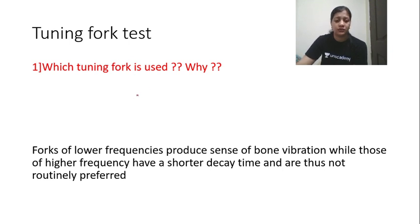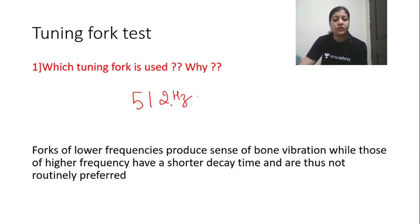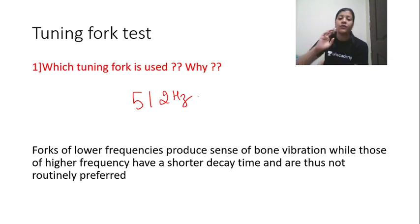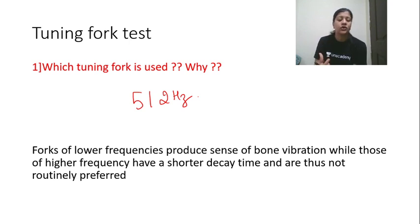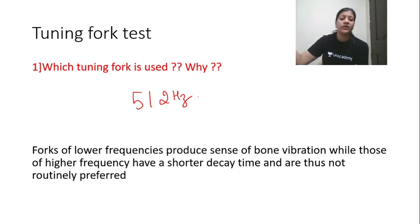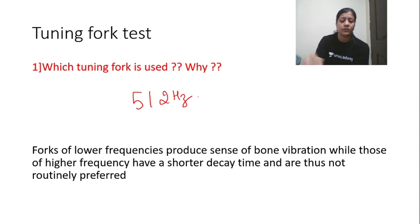What tuning fork do we commonly use? We use a 512 hertz tuning fork. Why 512 hertz? If you use a lower frequency fork, it will give you a false sense of bone vibration. Whereas if you use a higher frequency, the vibration of the tuning fork will last only for a shorter time — meaning a shorter decay time — so the patient will not be able to appreciate the change in sound. A lower frequency is not used because of false sense of bone vibration; a higher frequency is not used because of shorter decay time.